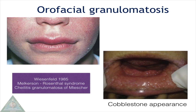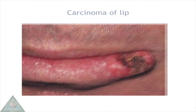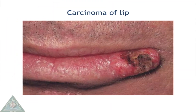Orofacial granulomatosis affects the lips and was described by Wiesenfeld in 1985. It is characterized by lip swelling and focal areas of submucosal enlargement known as cobblestone appearance. It is associated with Melkersson-Rosenthal syndrome and cheilitis granulomatosa of Miescher.